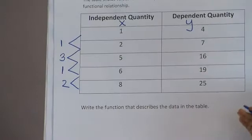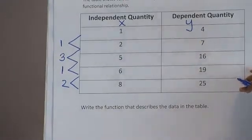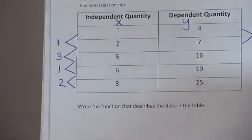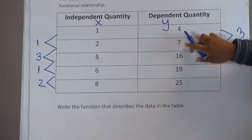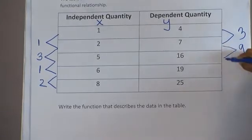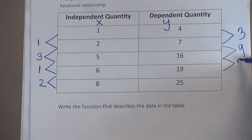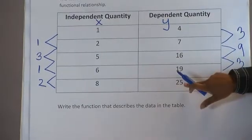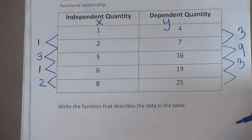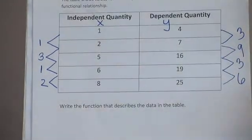We still have a lot of numbers. Still got some things to do. So I'm going to walk over to the dependent side and do the exact same thing. So let's find the difference between these particular values. Seven subtract four is three. Sixteen subtract seven is nine. Nineteen subtract sixteen is three. Twenty-five subtract nineteen would be, what is that going to give us? Six.